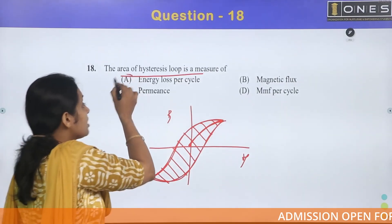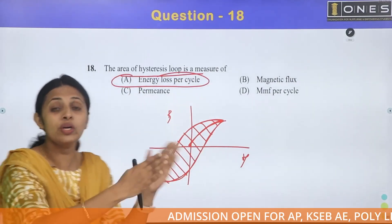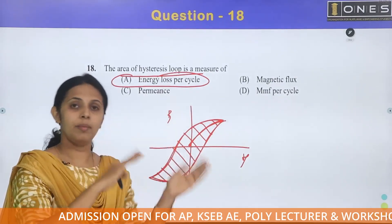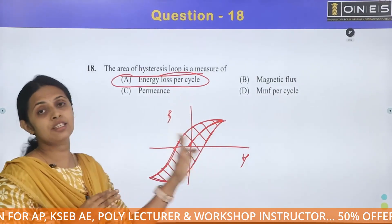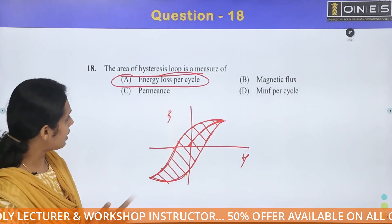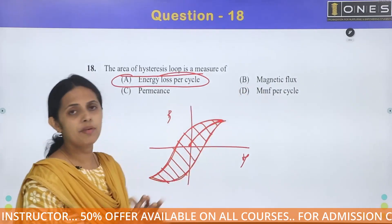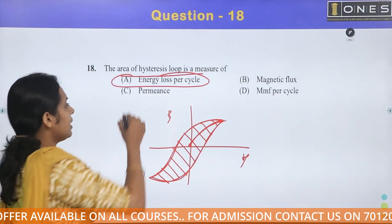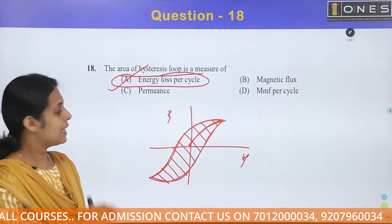The area of the hysteresis loop is a measure of energy loss per cycle. How much energy is lost during each magnetization cycle — that is what the area represents. The remaining options are magnetic flux, permeance, and MMF per cycle. The correct answer is Energy loss per cycle — Option A.